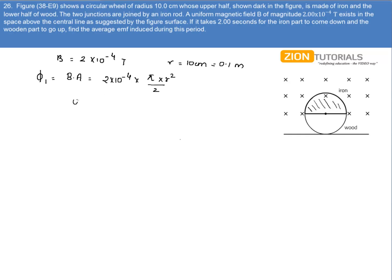The value of r is 10 centimeter or 0.1 meter. So phi 1 is 2 into 10 to the power minus 4 into 3.14 into 0.1 into 0.1 divided by 2, which comes out to be 3.14 into 10 to the power minus 6.